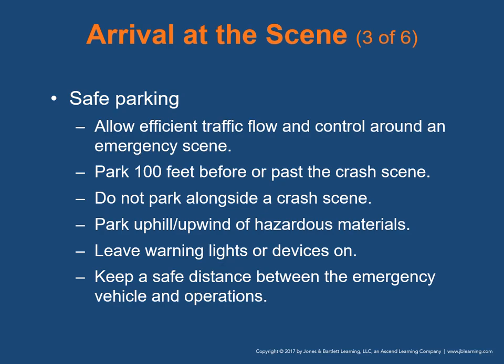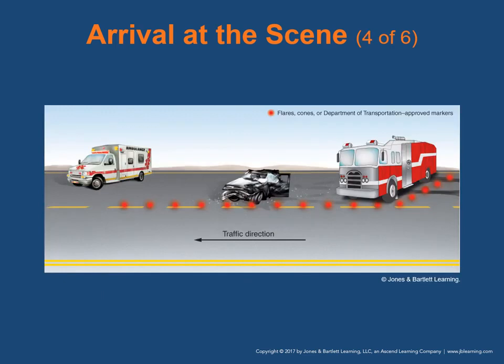For safe parking, pick a position that allows for efficient traffic control and flow around an emergency scene. The first vehicle to arrive should park 100 feet before or past a crash scene to create a barrier between EMTs and traffic. Do not park alongside a scene — you may block movement of other emergency vehicles. Park uphill and/or upwind of a scene with smoke or potentially hazardous materials, and leave your warning lights or devices on.